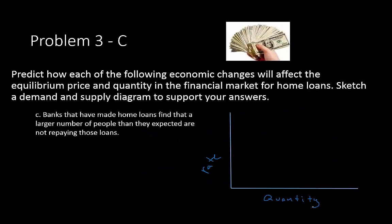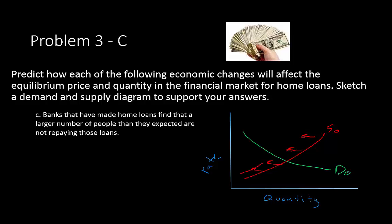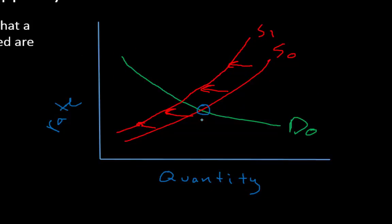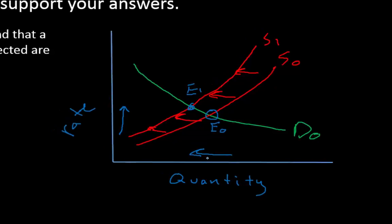Problem 3c: banks that have made home loans find that more people than expected are not repaying those loans. If money is lost from bad loans, the bank can't relend it, which is a decrease in the supply of loanable funds. Supply shifts to the left to S1. The new equilibrium E1 shows an increase in the rate and a decrease in quantity.